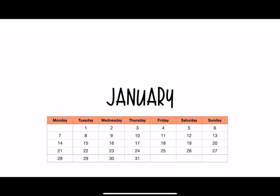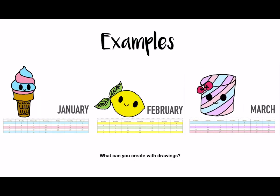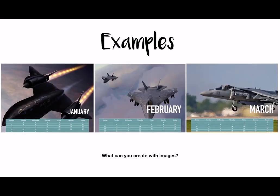This is what it should look like at the end. Here are some examples of things my students designed. One student designed something really cool with shapes. Another designed something with drawings she did herself — very friendly food. And another student designed something with aeroplanes and engines, a topic that he really loved.